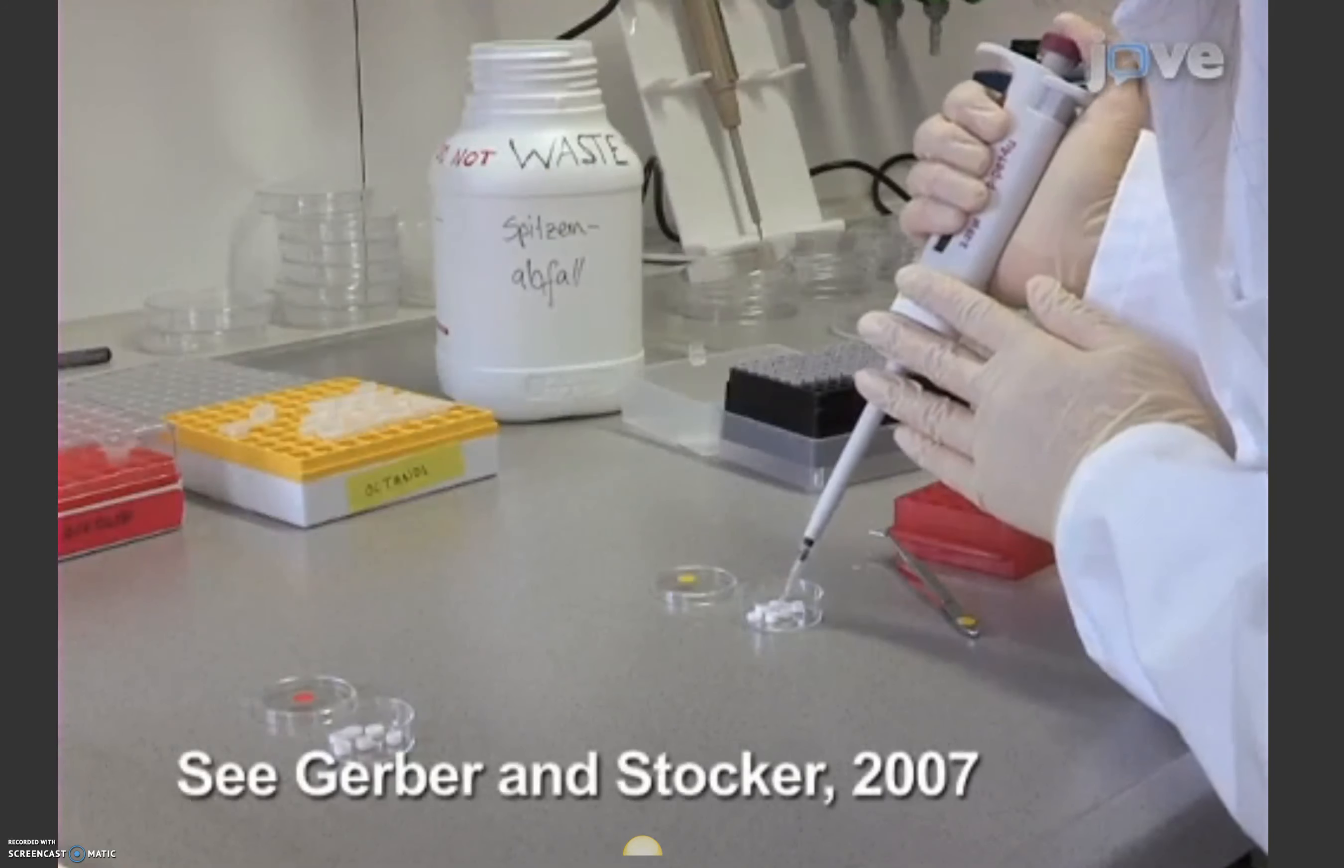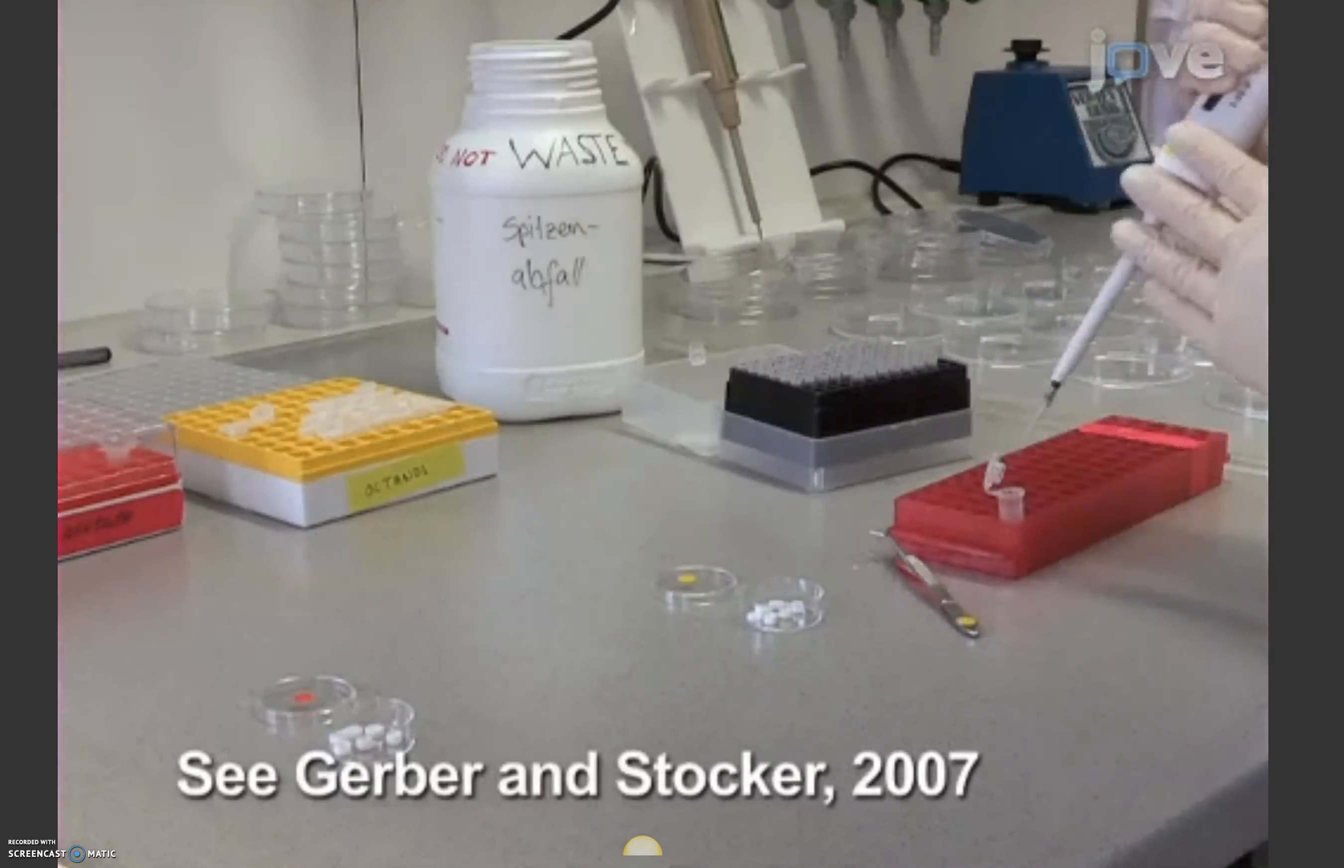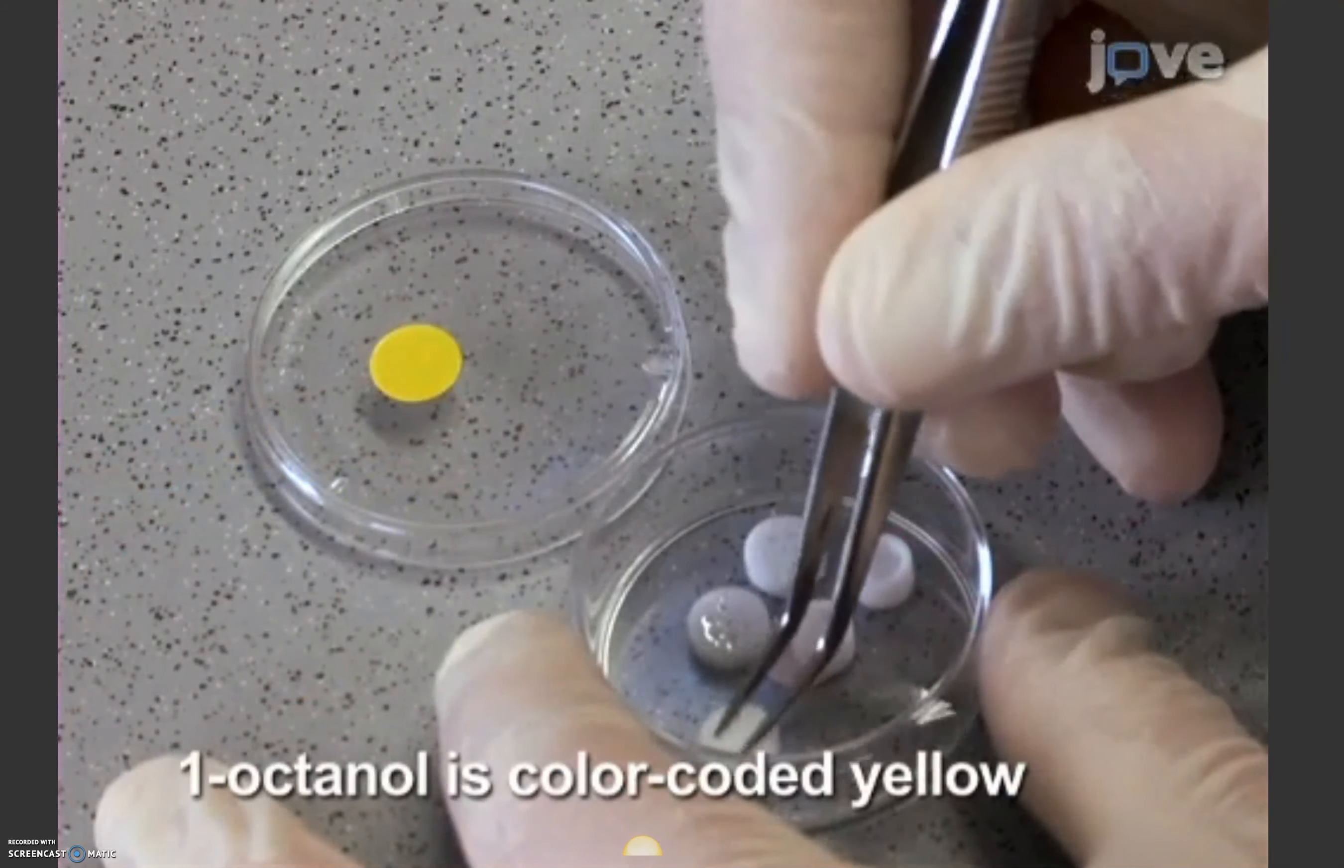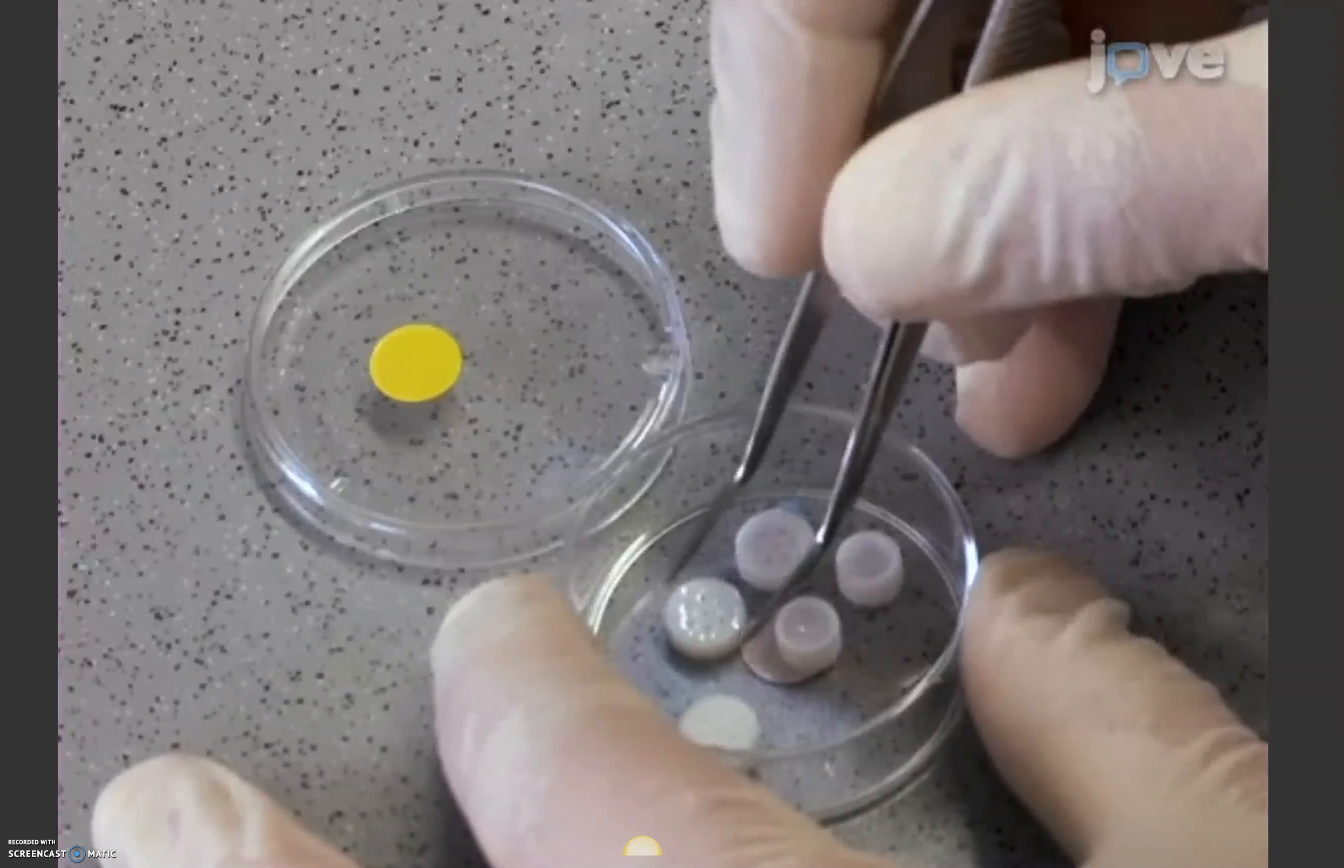For the conditioned stimuli, prepare a total of 3 customized teflon odor containers with 10 microliters of pure 1-octanol. The lids have small holes to allow for evaporation of the odor.